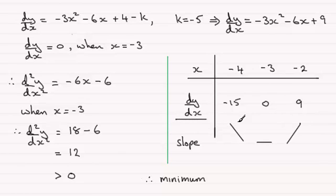So hopefully you can see that when we look at the slope here, you've got a curve coming around like this. So at the point where x is minus 3, you've got a minimum.